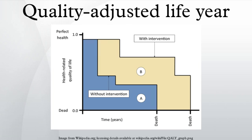Perfect health is hard, if not impossible, to define. Some argue that there are health states worse than being dead, and that therefore there should be negative values possible on the health spectrum. Determining the level of health depends on measures that some argue place disproportionate importance on physical pain or disability over mental health.